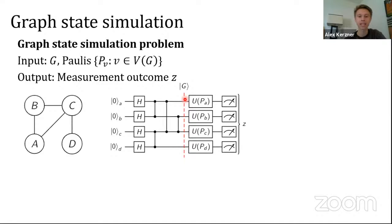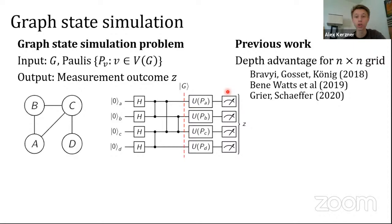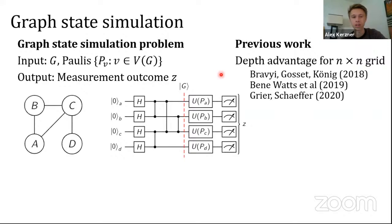The task we spend most of our time on is the graph state simulation problem. You're given a graph, and for every vertex you're given some local Pauli operator — X, Y, or Z — and the goal is to output a potential measurement outcome when you measure that graph state in those bases. This has been considered before for the grid graph: quantum circuits can do this in constant time, but it's known that classical circuits cannot. The case of general graphs, however, hasn't really been studied before.